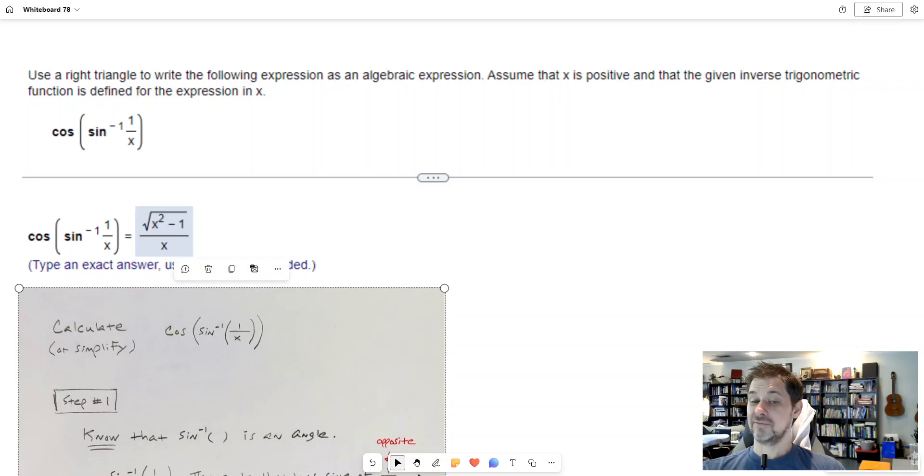I want to simplify or calculate this expression where it says what is cosine of the inverse sine of 1 over x. So there are a lot of of's there.